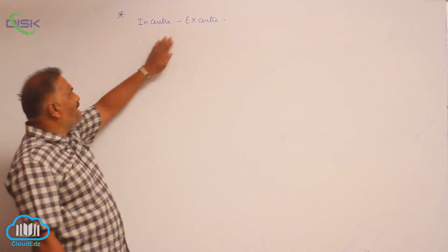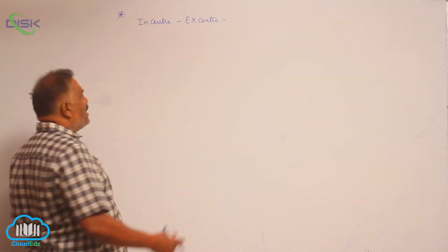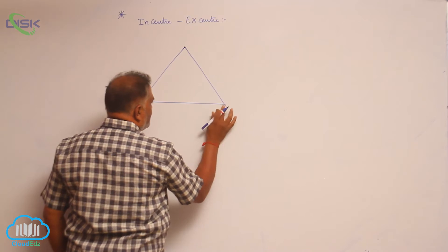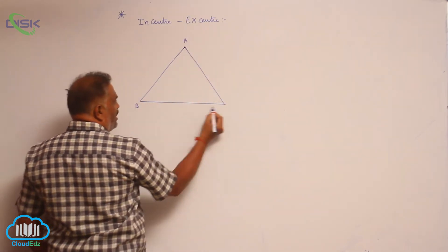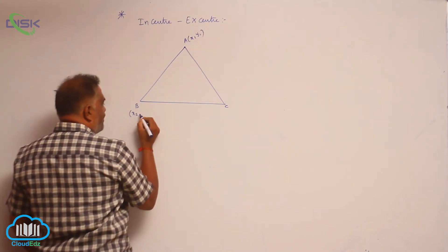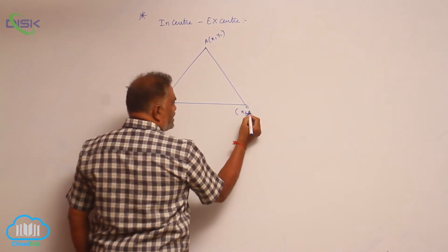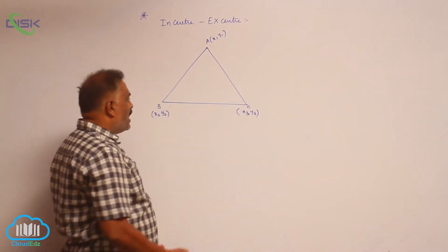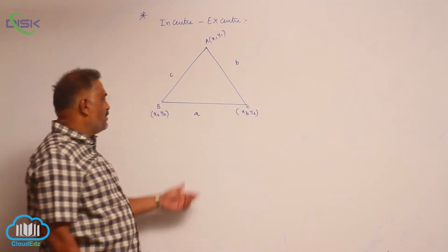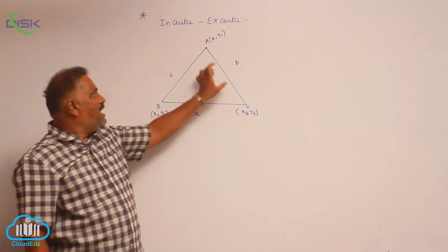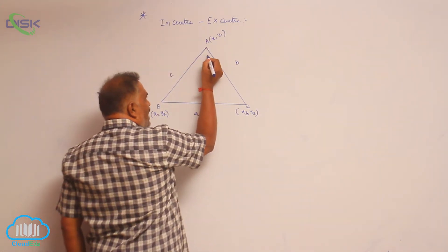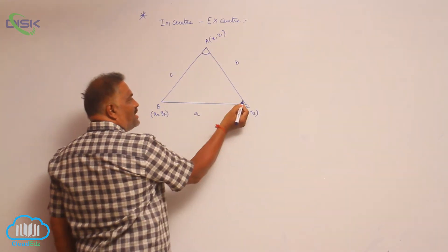We will discuss one more concept called incenter and excenter. Consider a triangle ABC. The coordinates are given by A(x1, y1), B(x2, y2), C(x3, y3). Assume that the lengths of the sides are denoted by a, b, c — that means BC has length a, CA has length b, AB has length c. The angles at vertices are angle A, angle B, and angle C.